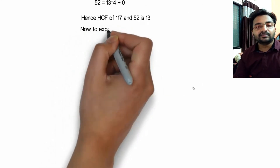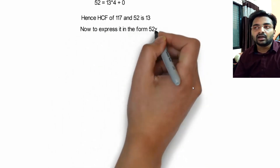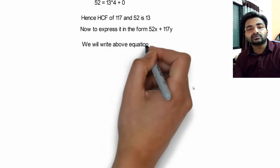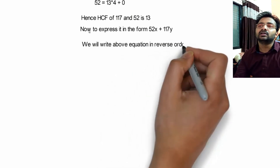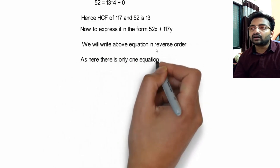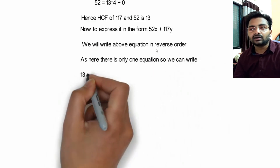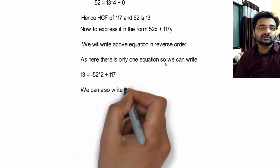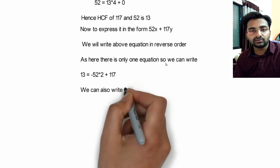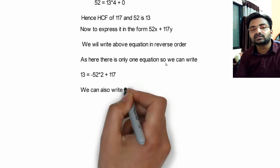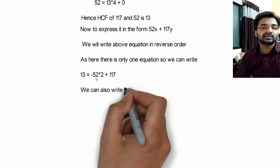Now we need to find the values of x and y. To express it in the form 52x + 117y, we will rearrange equation number 1 in reverse order. Note that since there is only one equation — because the remainder 0 came in the second equation itself — we got the HCF from the first equation. So we will write only that one equation in reverse order.